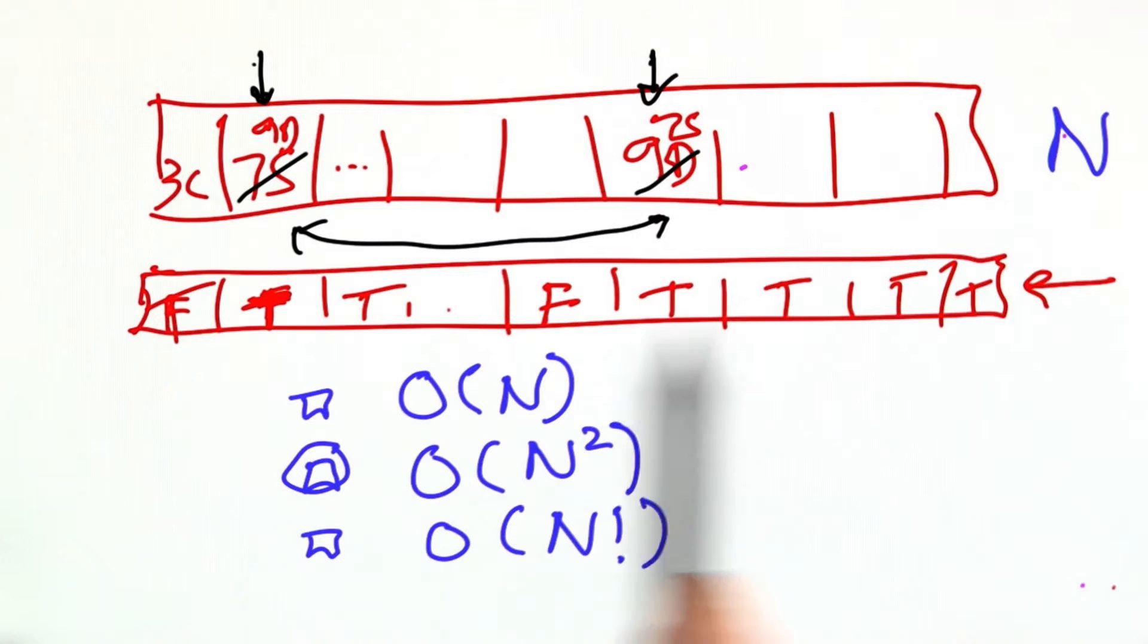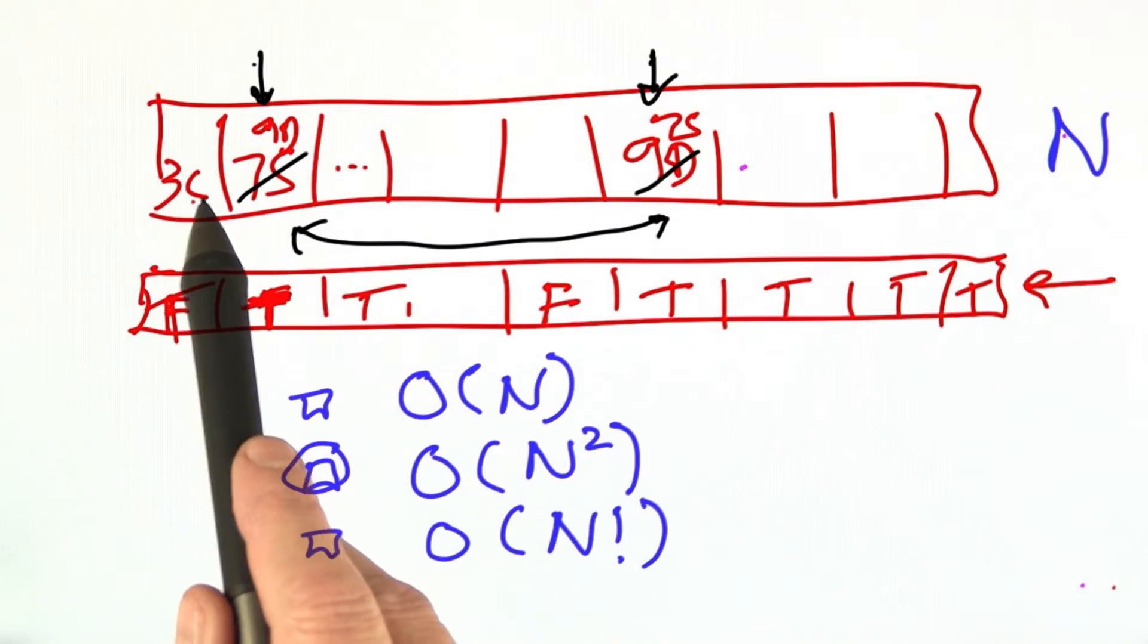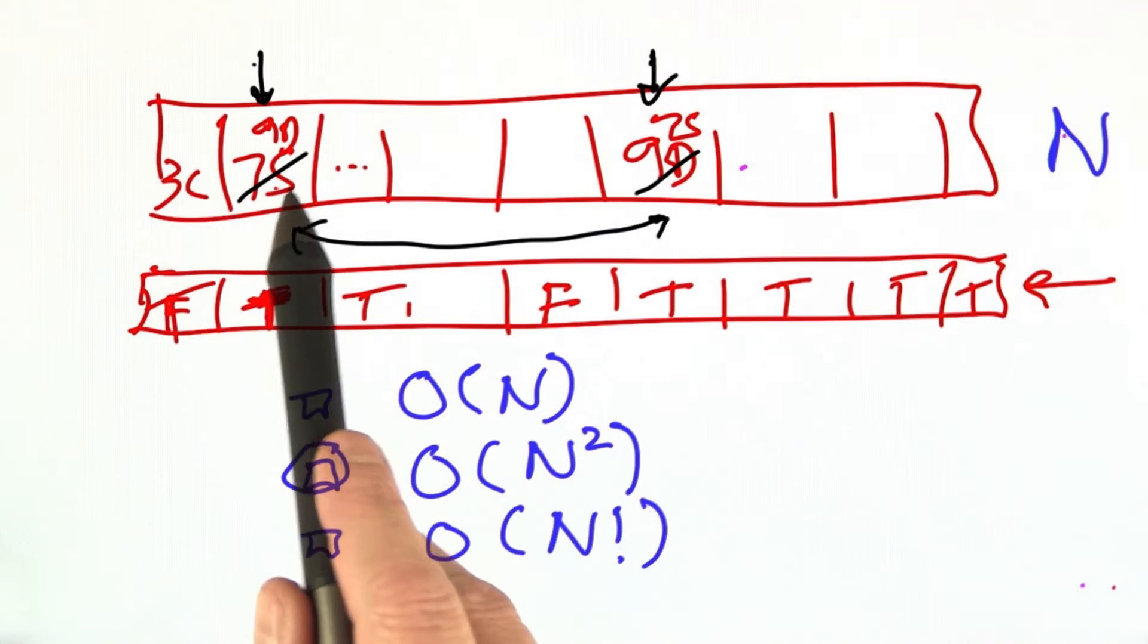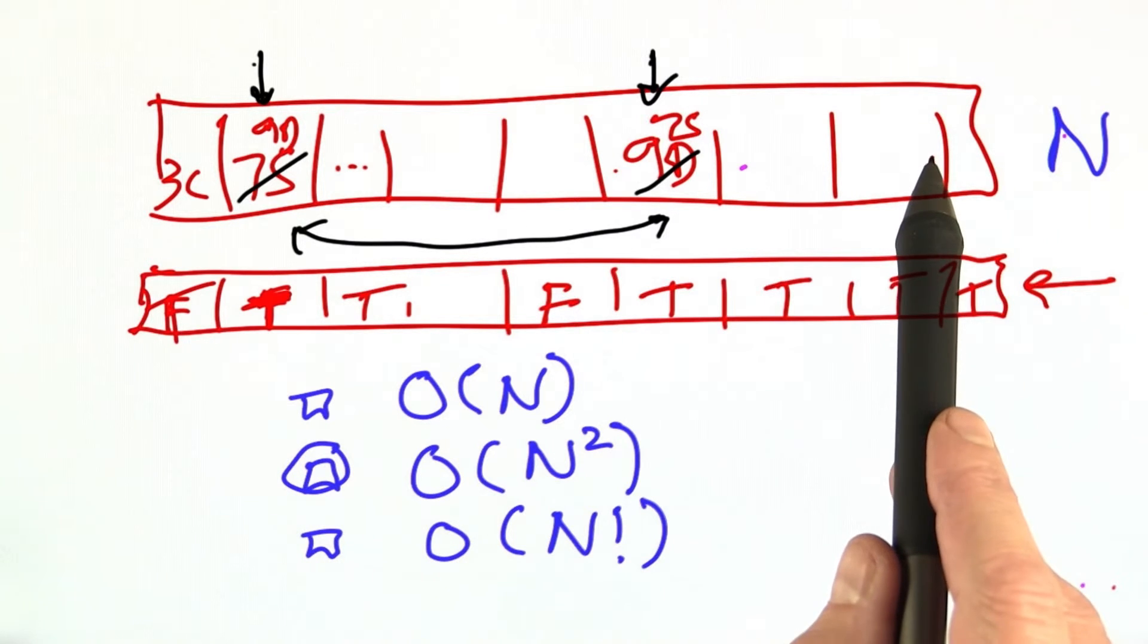So for each of these n elements of the array, we can expect on average to take n or less. For the first one, it'll be easy. The second one will be a little bit harder. The last few, it'll be hardest still.